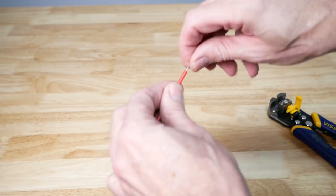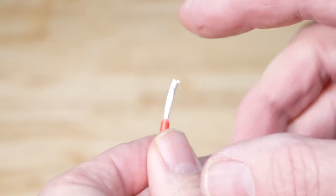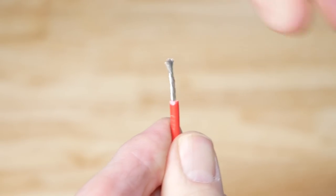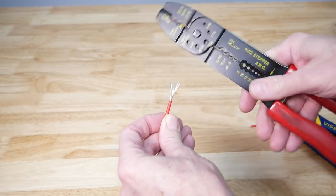And what's really special about this, you'll notice when you pull this off, none of the wires underneath, this is a stranded wire, none of these have been damaged. And that was the problem I always had with this wire stripper, is I always ended up cutting a few of these little strands in here.